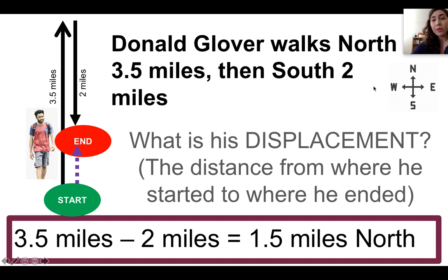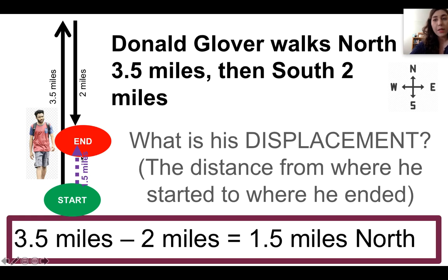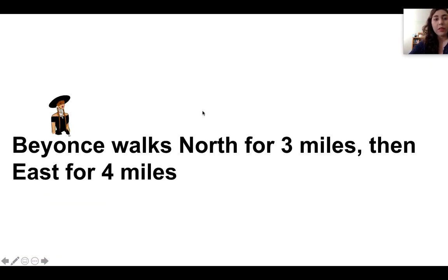You always draw your vector directly from start to end. Going from start to end, it's pointing up, which is north according to our compass. You figure out the length by taking one path minus the other when they're going in opposite directions. If arrows are going in the same direction you add them; if opposite, you subtract. So 3.5 minus 2 leaves you with 1.5 miles, and it's north because it's pointing up.